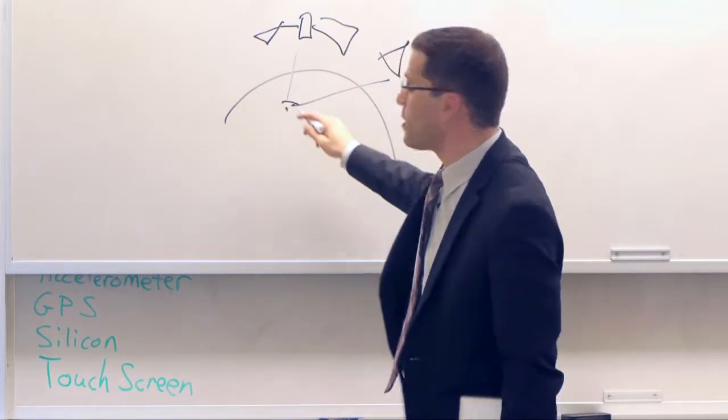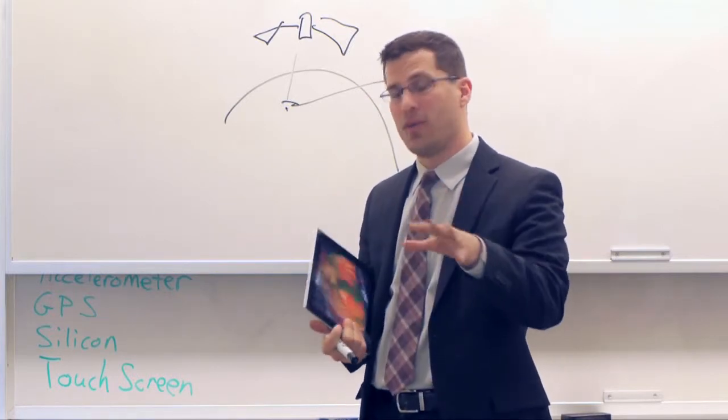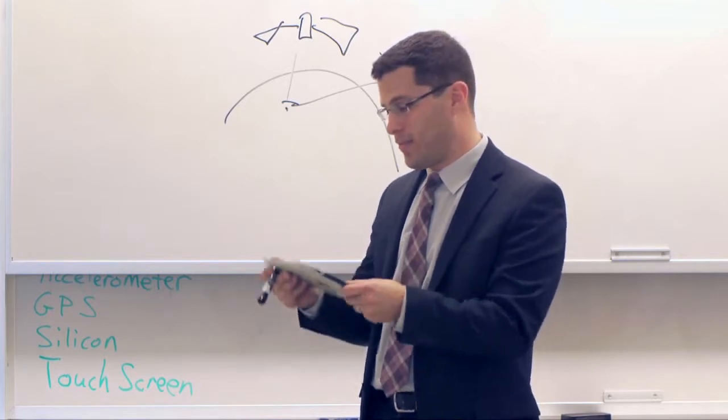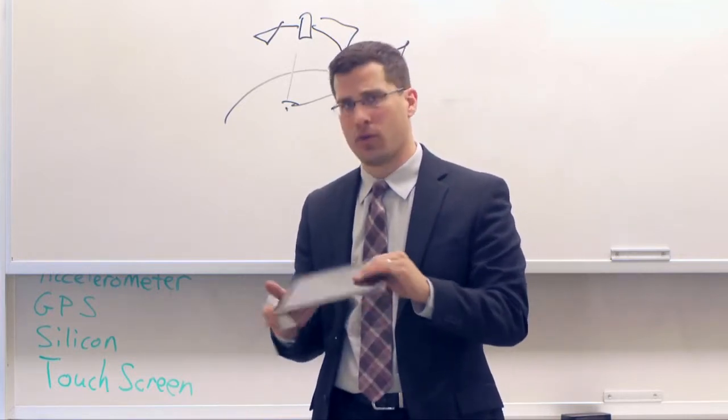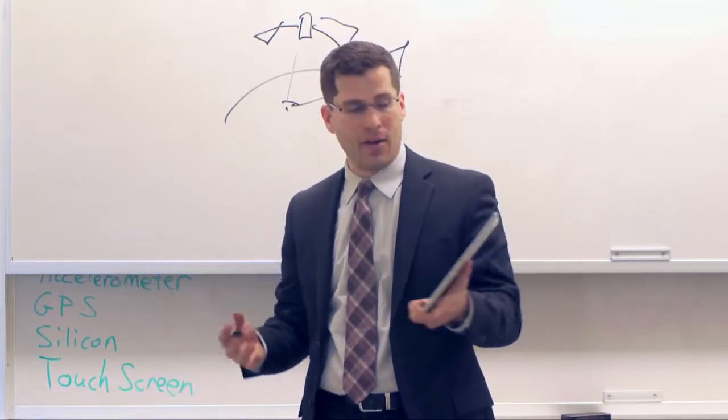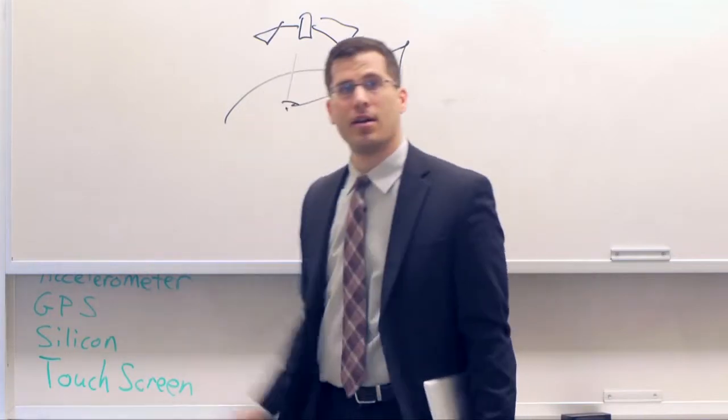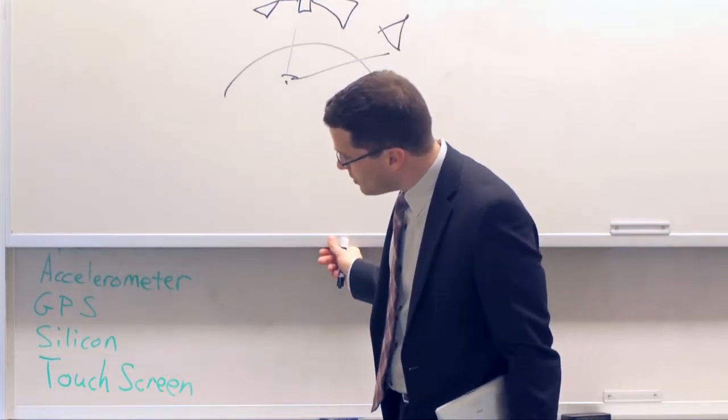It triangulates where you are so it knows it can pinpoint relatively where you are in the world and it can identify that and track you or can even give you information dependent upon that. For instance, if I'm using Living Social or Groupon and I want to look up what's the best deal in the area, I don't even have to tell it where I am, it automatically already knows, which is kind of fantastic if you think about it.